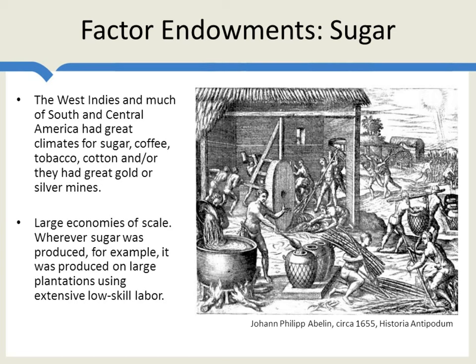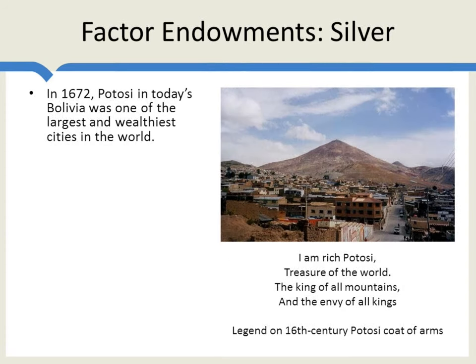Think about what a society born with this kind of picture would look like — how it's going to develop. Here's another factor endowment: silver. In 1672, Potosi, which is in today's Bolivia, was one of the largest and wealthiest cities in the entire world, all because of this giant mountain in the background, which had huge deposits of silver.